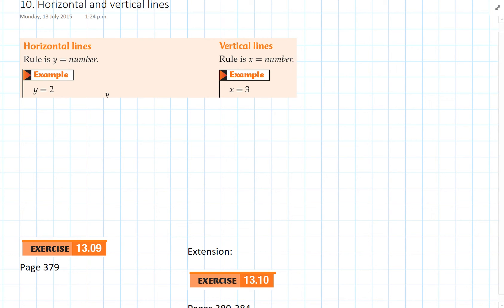So let's draw up a set of axes to illustrate this. Okay, so y equals 2 means that it has to go through the y axis at 2. And then we just put a horizontal line through like that. And we can just label it y equals 2. So you can see it's very straightforward.